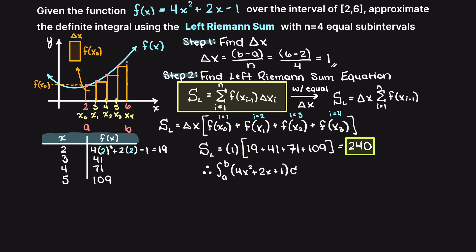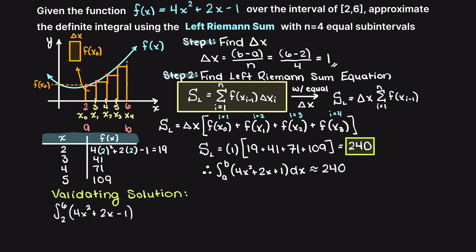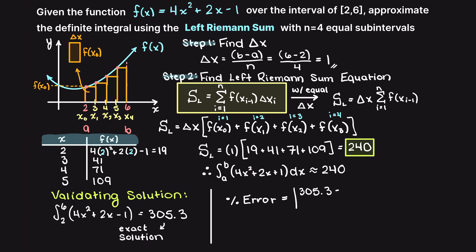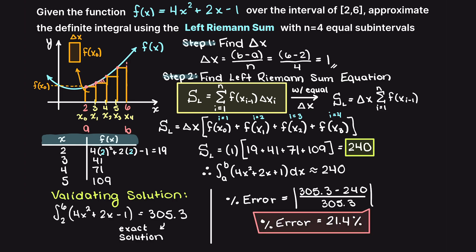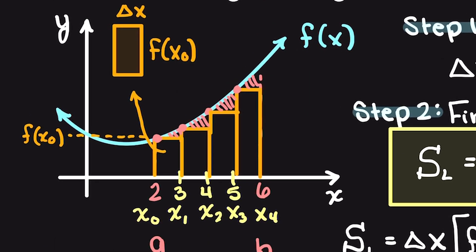Since we have all the information, we can actually check our answer with the exact solution using a definite integral calculator online, or actually solving it yourself. Doing so, we find that the analytical solution to this problem is 305.3. That means that our left Riemann sum is underestimating with a relative error of 21.4%, which is not great. But this does make sense based on our schematic here.